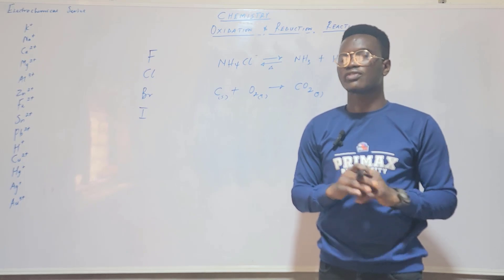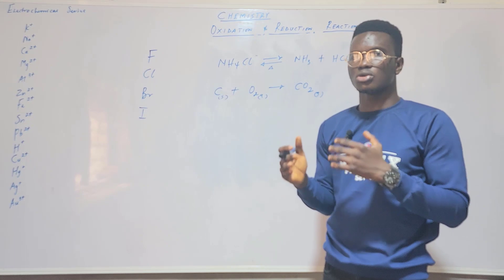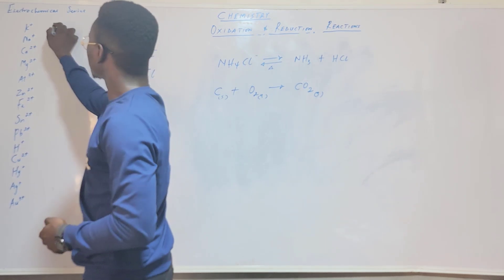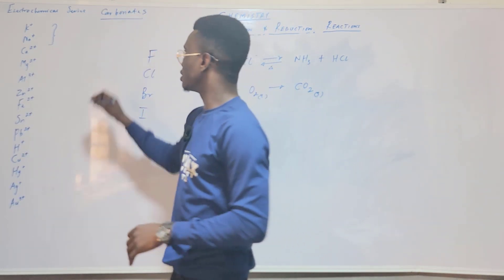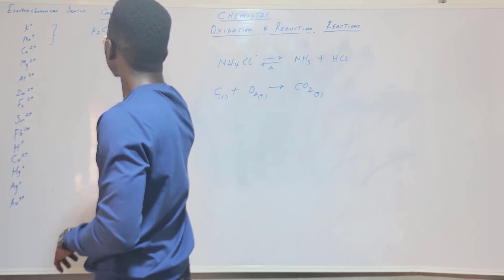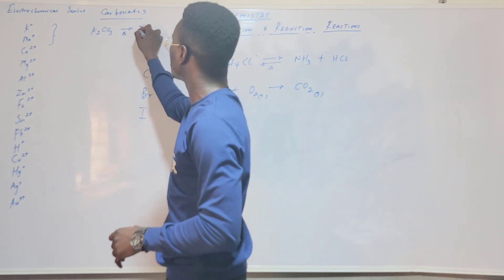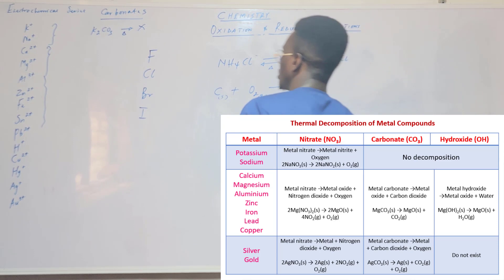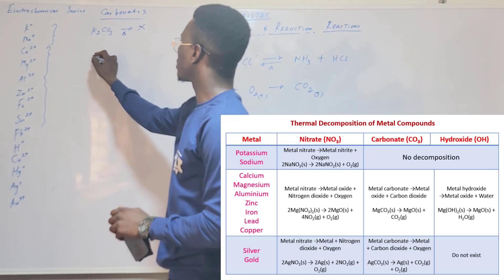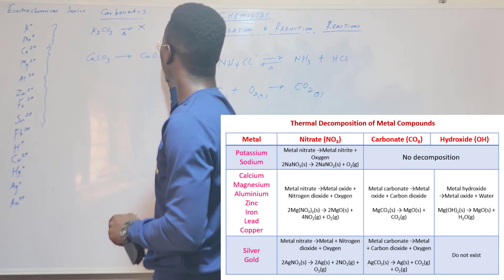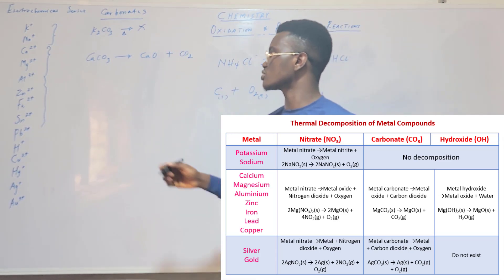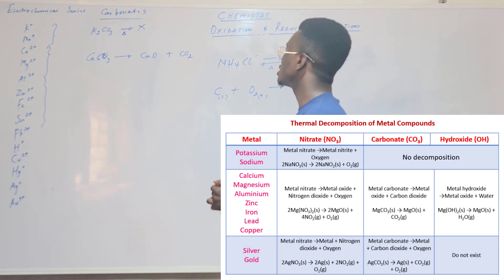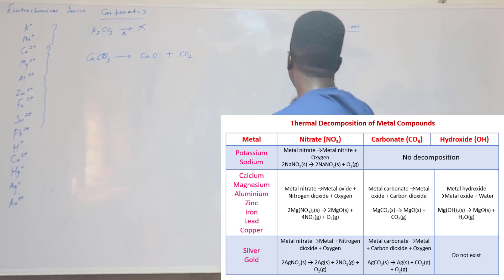Before moving on, note something important for exams about decomposition of carbonates. For potassium and sodium carbonates — for example, K₂CO₃ — when you try to decompose them, you do not get any products. But for other metal carbonates, you do get the metal oxide and CO₂. For example, decomposing CaCO₃ gives CaO and CO₂.